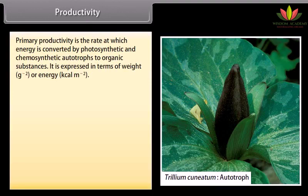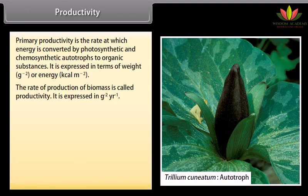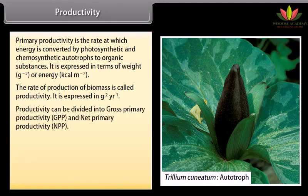Productivity. Primary productivity is the rate at which energy is converted by photosynthetic and chemosynthetic autotrophs to organic substances. It is expressed in terms of weight per gram square or energy kilocalorie per meter square. The rate of production of biomass is called productivity, expressed in per gram square per year. Productivity can be divided into gross primary productivity (GPP) and net primary productivity (NPP).